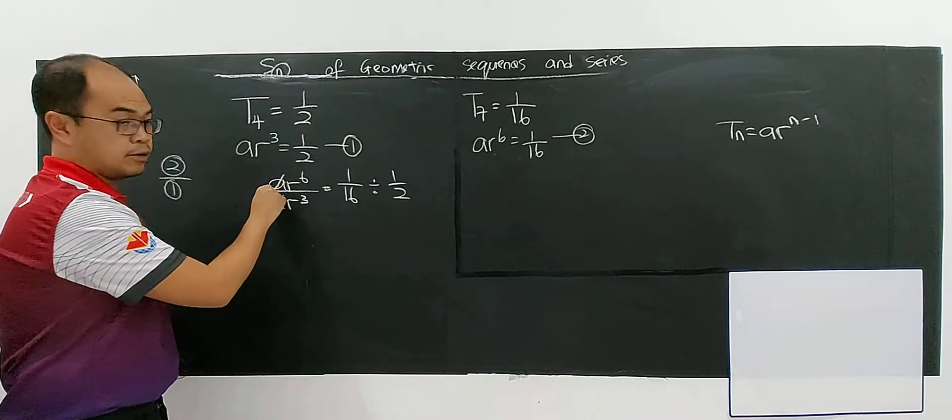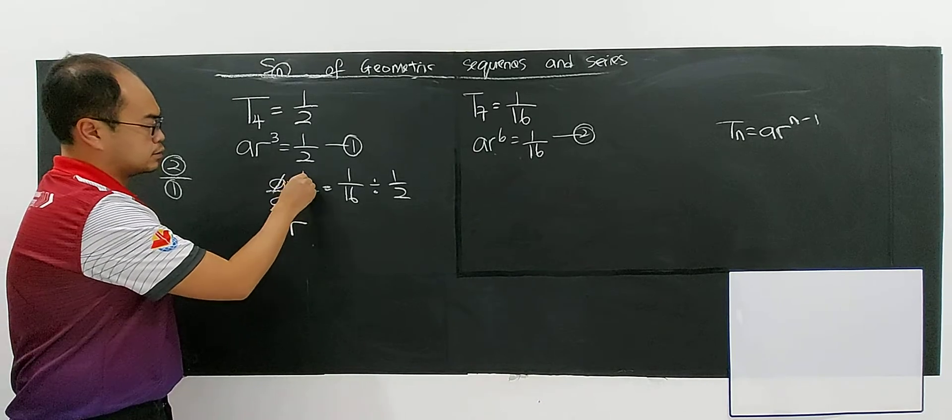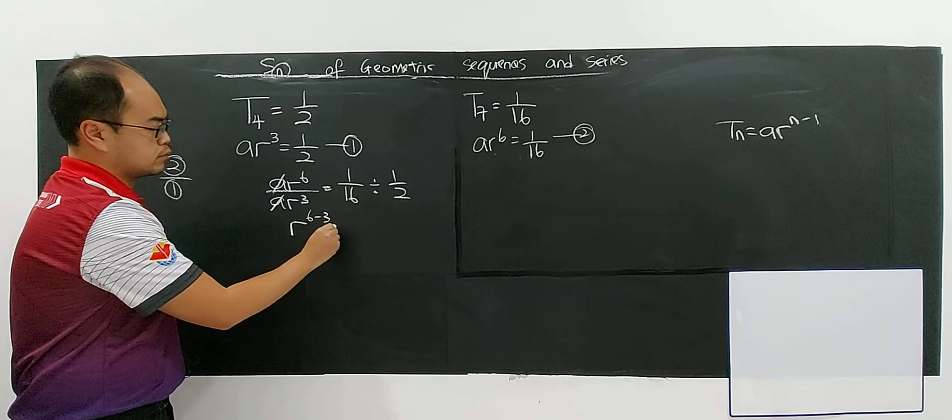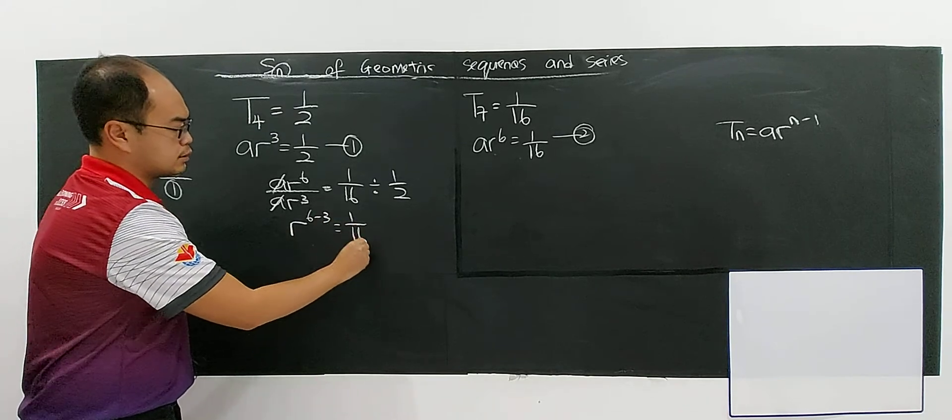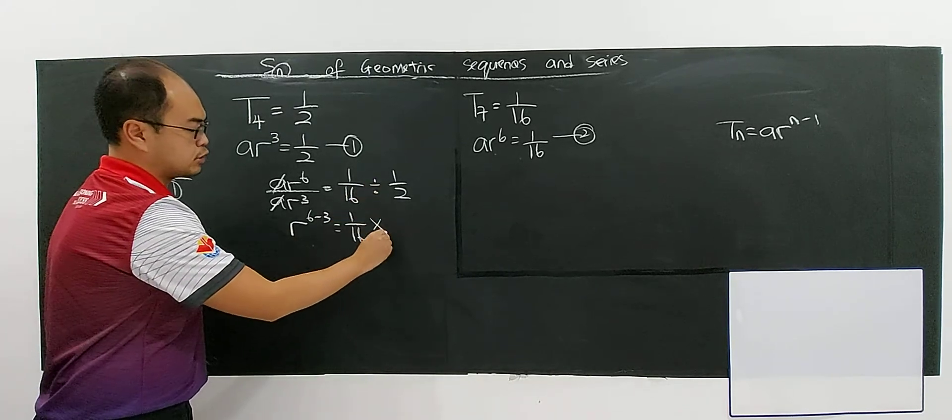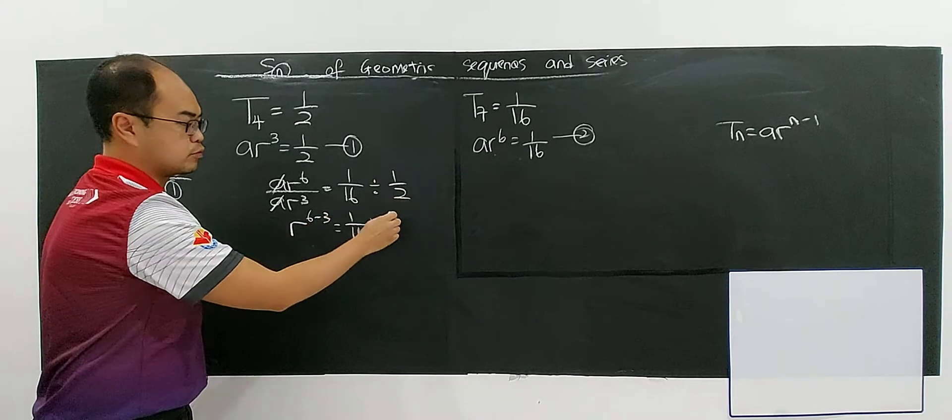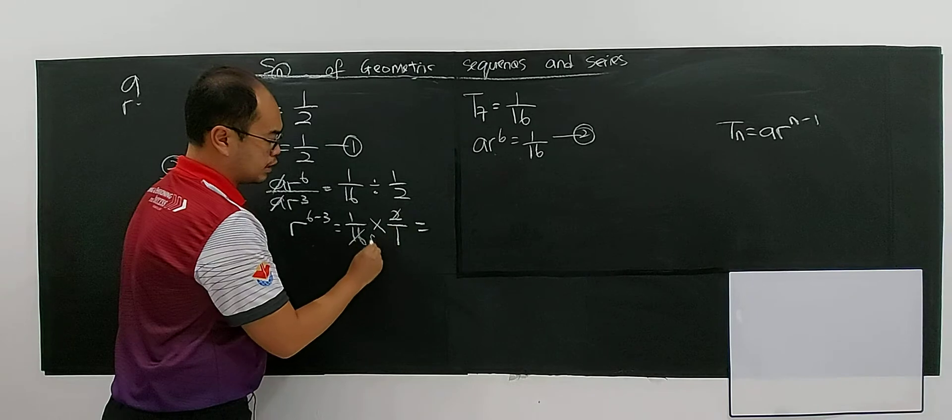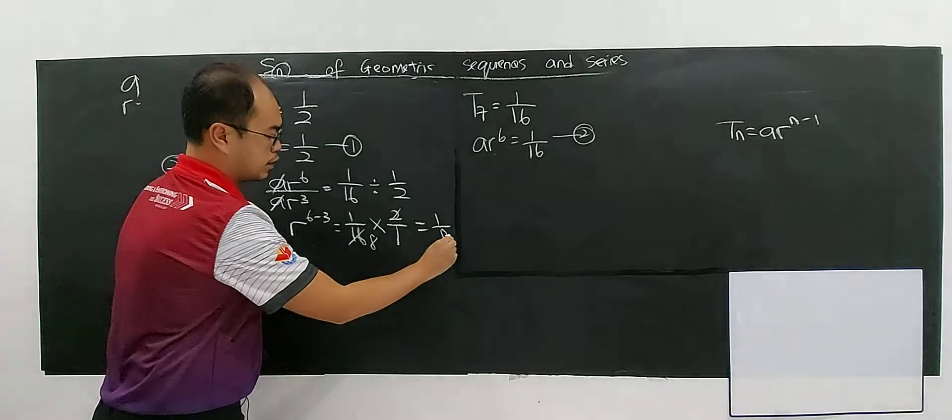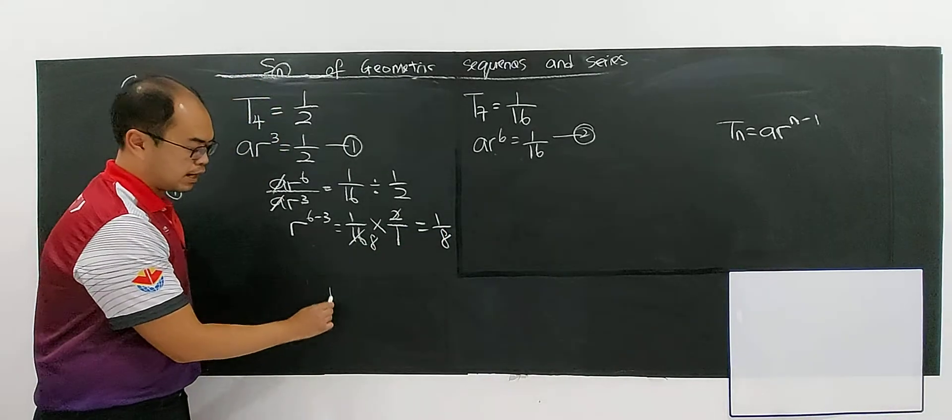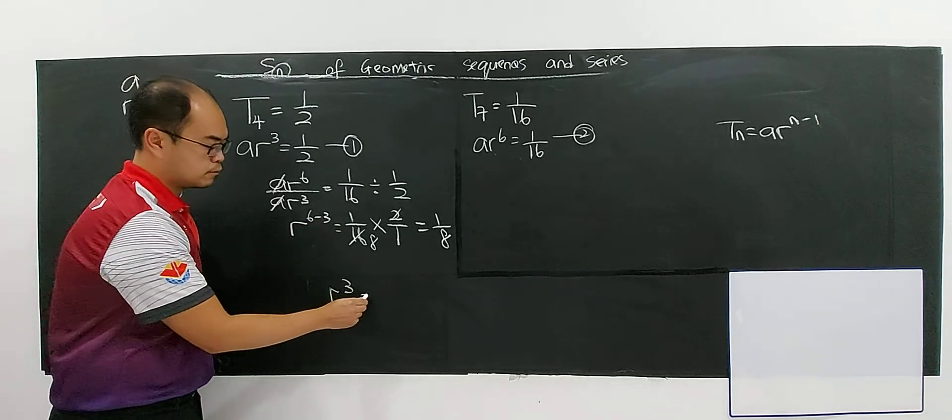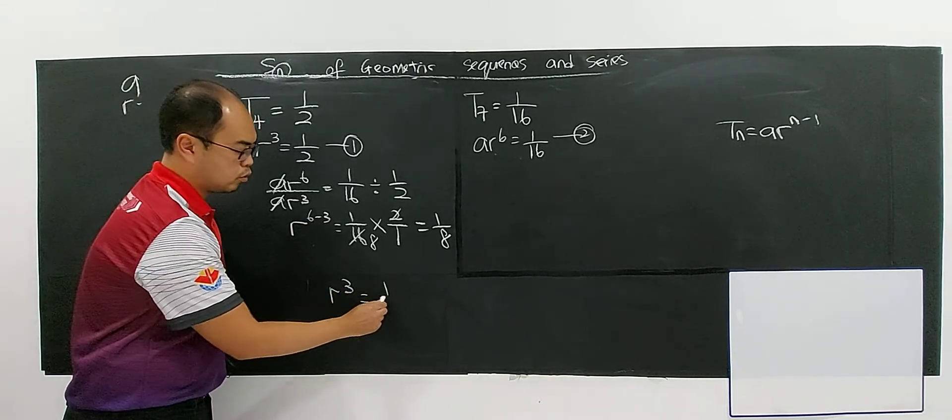So now this one cancel out. And AR, 6 minus 3, divide mah. So 6 minus 3. So 1 over 16 if divided, you can change, become multiply. But this one you have to reverse, become 2 over 1. So what you will get? You will get 2, 8, 16, which is 1 over 8. And for this side, you have AR to the power of 3, 6 minus 3 is AR power of 3, which gives you 1 over 8.